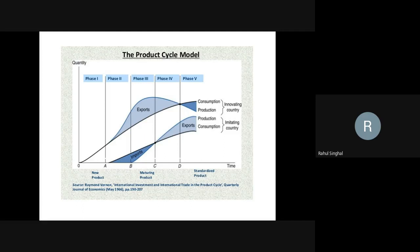And the product then enters into a growth stage. In the growth stage, the company of the home country decides to export it to other countries as well — countries which are not identical markets but where there is scope for consumption. What the company does in the growth stage is, instead of setting up manufacturing units in various countries, they start manufacturing in their home country and exporting to other countries and various markets. Gradually, when sales are boosted and they realize the product is going to clear the growth stage and enter into a maturity stage.